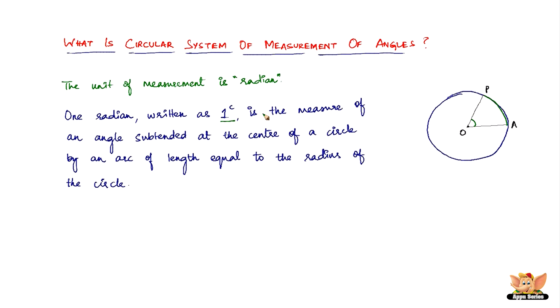To define 1 radian, the measure of the angle is subtended at the center of the circle by an arc of length equal to the radius of the circle. Whenever an arc is equal to the radius of the circle, then the angle subtended at the center is equal to 1 radian.